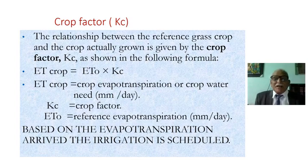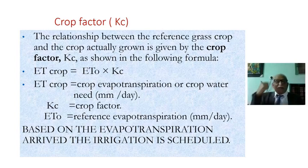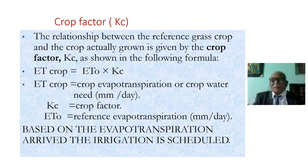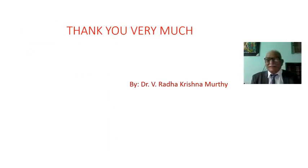Based on evapotranspiration measured using the pans, the irrigation is scheduled. This is the crux: irrigation is scheduled by multiplying E-tvo by Kc. To get E-tvo, we must apply the pan coefficient. When sun rises, it rises for everyone. Thank you very much. May God bless you.